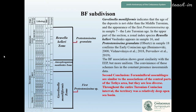Gavelinella moniliformis indicates that the age of deposits is not older than the middle Turonian, and the appearance of the first Coniacian species in sample 7 confirms the late Turonian age. In the upper part of the section, the zonal index Reussella calvata appears in sample 16 and Coniacian Schwagerina granulata in sample 18, confirming the early Coniacian age. The benthic foraminiferal associations show great similarity with the Eastern European platform but are more uniform.